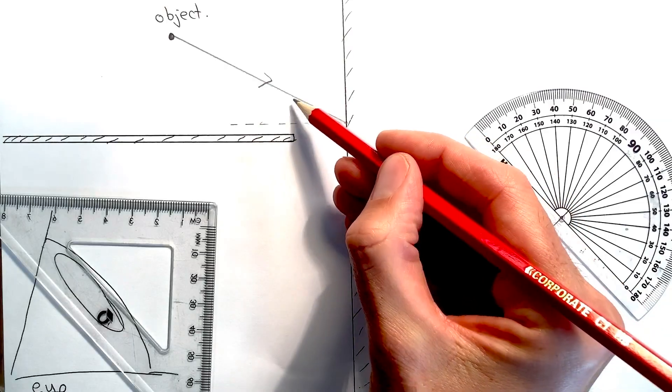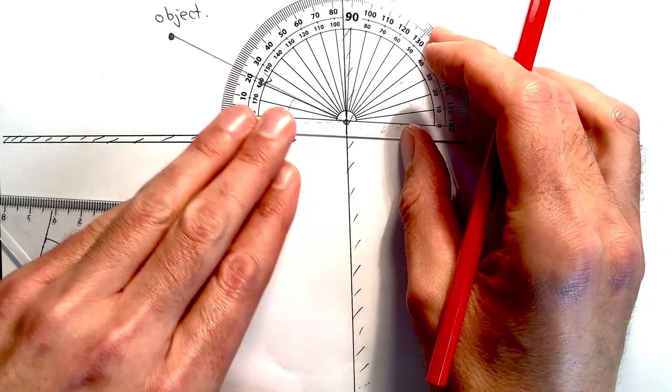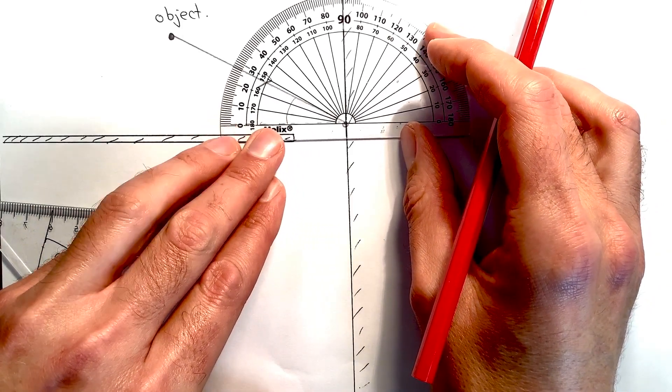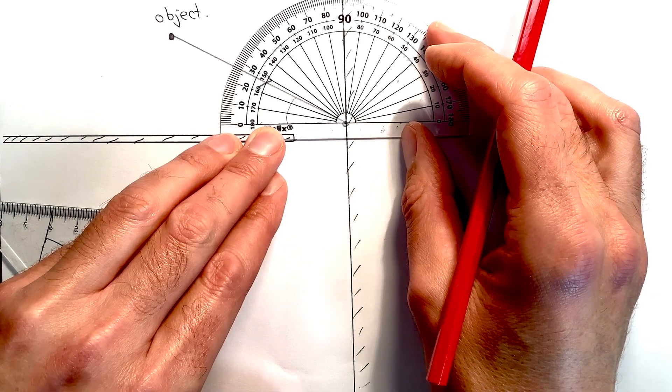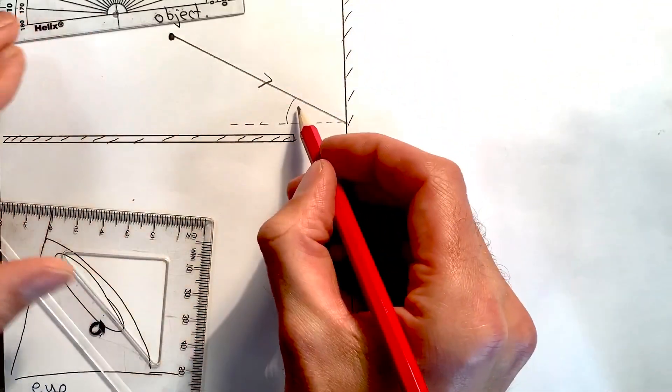And now I need to measure this angle, which is the angle of incidence. To do that, I can place my protractor here and carefully read off that that angle in this case is 27 degrees.